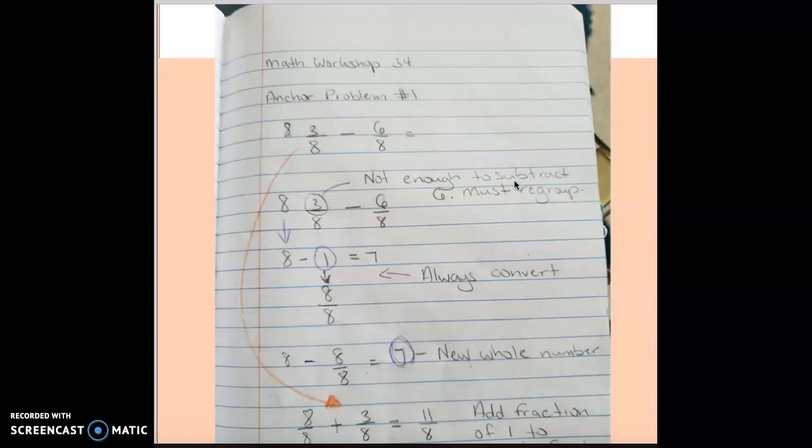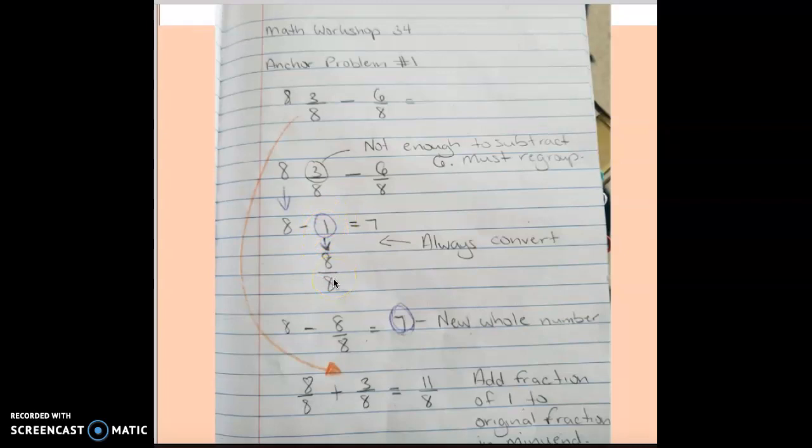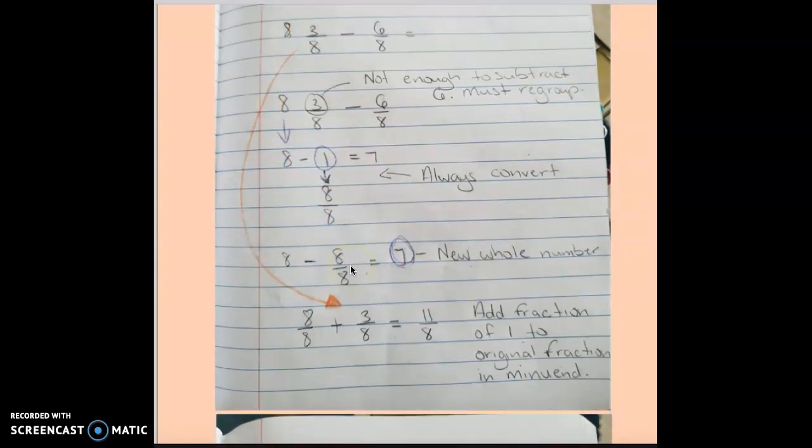First, I looked at the minuend and took notice that the numerator in my minuend is not enough to subtract the numerator in my subtrahend, so I have to regroup. I'm going to take my whole number and subtract one: eight minus one equals seven. I always convert my whole number of one that I regrouped into a fraction, so that'd be eight over eight, from the denominator we originally started with.